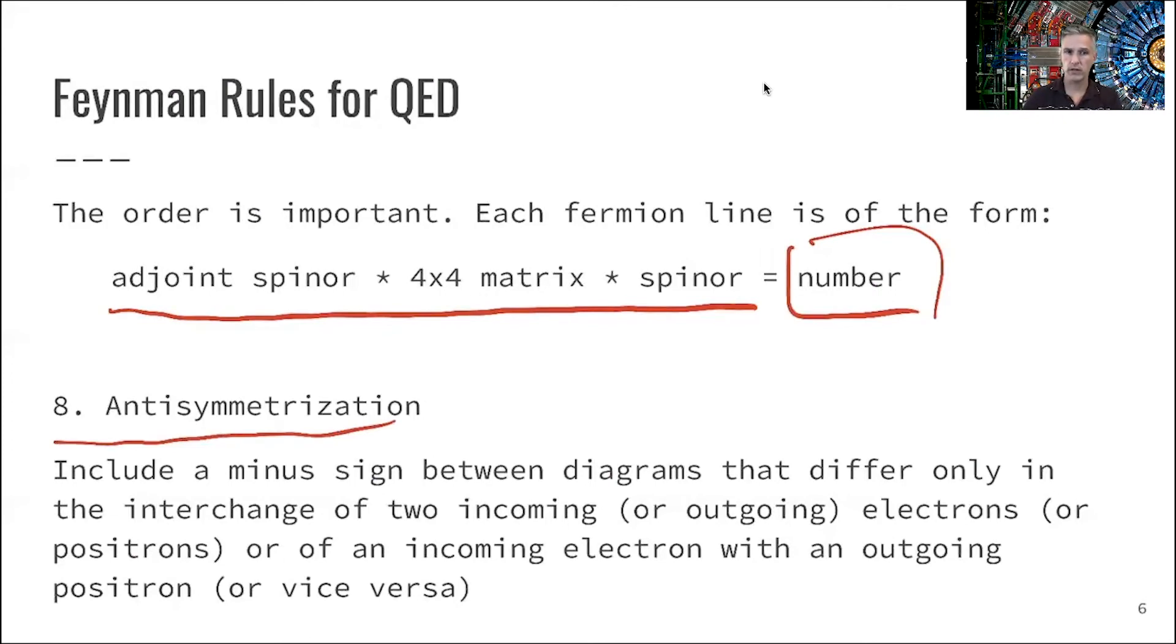There's an anti-symmetrization where we have to introduce a minus sign between diagrams that differ only by the interchange of two incoming or two outgoing electrons and positrons, or of an incoming electron with an outgoing positron. If you have a diagram which is exactly the same but the two incoming electrons are interchanged, you add those two diagrams. You add all matrix elements together before calculating an amplitude, but introduce a minus sign when you change those two particles.